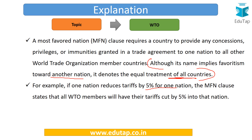Let's understand this with an example. Suppose Country A reduces tariffs by 5% for Country B. Then according to the Most Favored Nation clause, all the WTO members will have the tariffs cut by 5%.